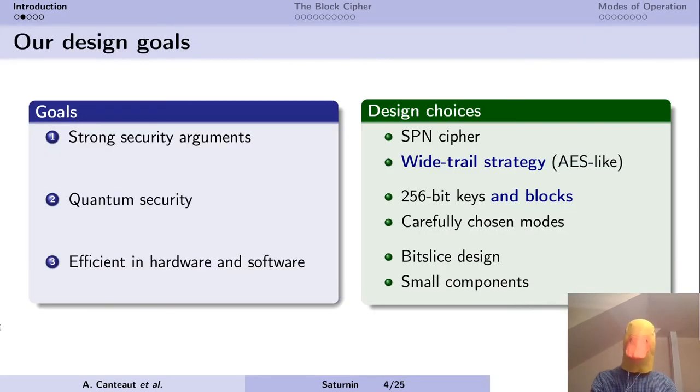We had three main design goals in mind. First, we want a cipher with strong security arguments. We're going to use an SPN cipher and a wide-trail strategy, just like in the AES. But we also want quantum security, which forces us to use 256-bit keys, blocks of the same size, and carefully chosen modes with quantum security arguments. We also want the cipher to be efficient in hardware and software, which is why we have a bit-sliced design and build the cipher from very small components, like 4-bit S-boxes.